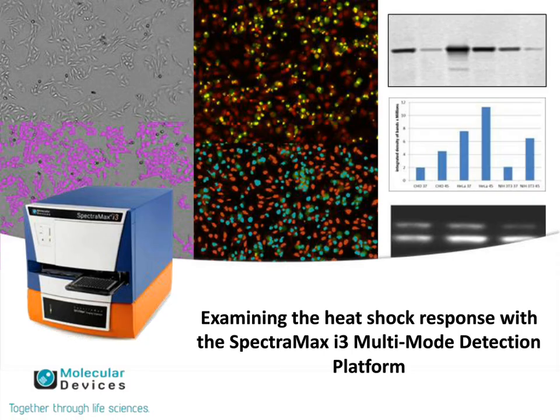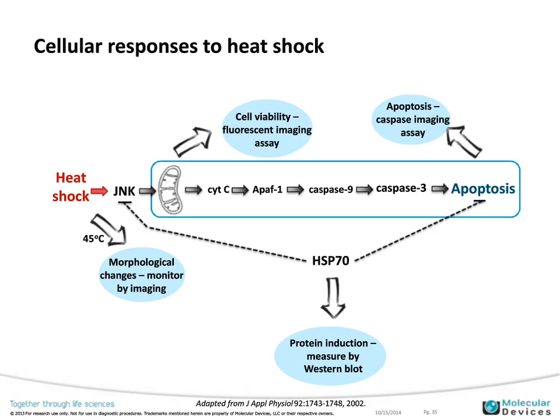I'll hand off to Kathy, who will tell you how she used these tools to look at heat shock response in CHO and GELA cell lines. In mammalian cells, there are a number of cellular responses to heat shock — exposing cells to a temperature higher than their normal 37°C growth temperature. Pathways induced in response to heat shock include cell death pathways including apoptosis, as well as cell survival pathways. Different balances of these pathways exist in different cell lines, and we investigated that in the CHO and GELA cells.